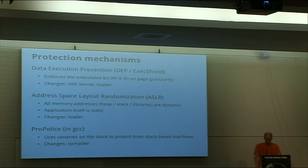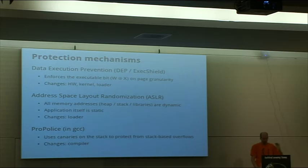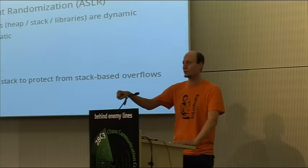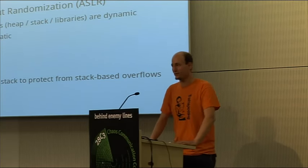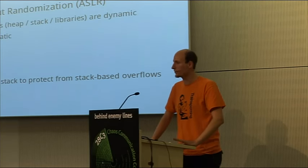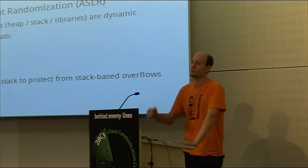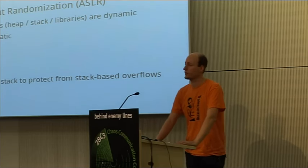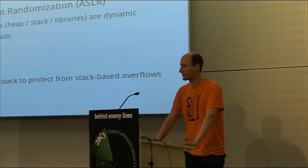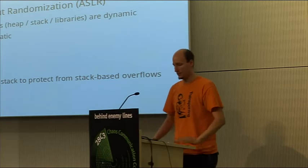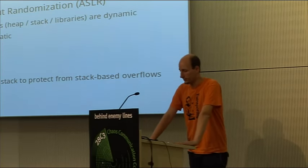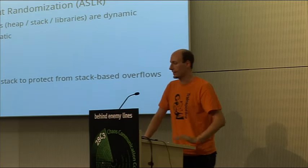The last important protection mechanism is ProPolice, used in more current versions of GCC. ProPolice adds additional canaries. A canary is a little bird that miners used to take down into mines — if the bird died, the miners knew the air was getting thin. The same idea applies to canaries on the stack. The compiler places secret, hidden values at specific locations on the stack and checks them at specific intervals to see if they are still the same. If there has been a buffer overflow, the canary values will change. The program will detect that and terminate itself. Combining these mechanisms makes our life a lot harder.